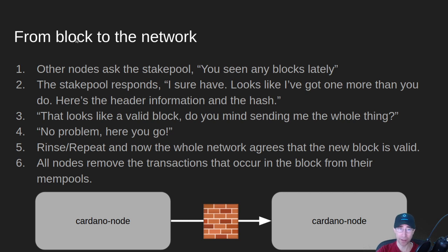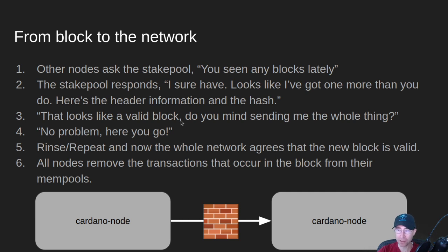So how does that block get out to the network? Cardano is a pull-based network — it does not push blocks out, as that could exhaust resources on other people's machines. Other nodes are continually asking the stake pool, "Hey, have you seen any blocks lately?" The stake pool says, "Sure, I've got one more than you. Here's the header information and the hash of that new block." The other nodes say, "That looks like a valid block — I validated that hash. Do you mind sending me the whole block?" The stake pool says, "Here you go," and that process repeats until the whole network agrees that this new block is valid.